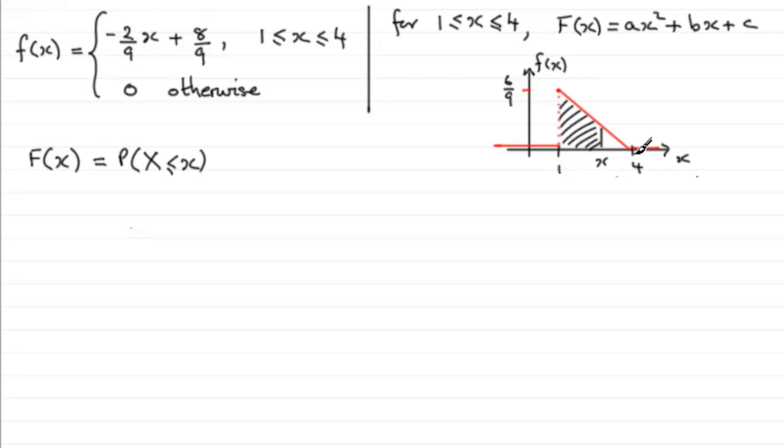Going between 1 and 4, and being a straight line, you can just substitute when x is 1 into here. You've got minus 2 ninths plus 8 ninths, which is 6 ninths. I'll just leave it as 6 ninths. That's that highest value there.